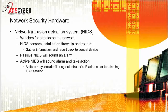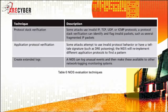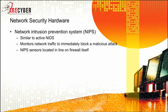Next, you have NIDS, or Network Intrusion Detection Systems, which watch for attacks over the network. NIDS sensors are installed on firewalls and routers and report back to a central device. Passive NIDS will sound an alarm, while active NIDS will sound an alarm and take action, such as filtering out an intruder's IP address or terminating the TCP session. These actions are more commonly associated with NIPS, or Network Intrusion Protection Systems, which monitor network traffic to immediately block malicious attacks, with sensors located in-line rather than on the firewall itself.